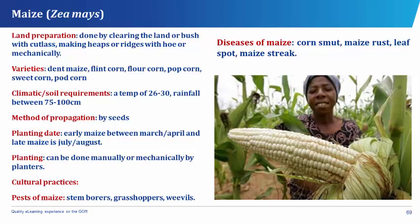It has its epicarp fused with the mesocarp. The land preparation of maize is done by clearing the land or bush with cutlass, making heaps or ridges with hoe or mechanically.